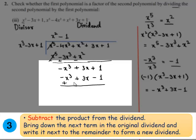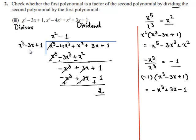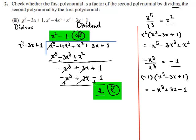On subtracting, -x³ and +x³ cancel; 3x and -3x cancel; and this leaves 2. The degree of 2 is less than the degree of the divisor, so we stop the division here. This 2 is treated as the remainder and x² - 1 is treated as the quotient.